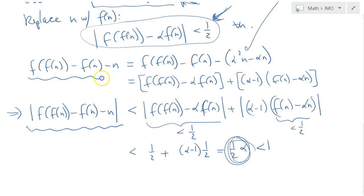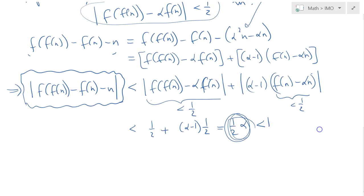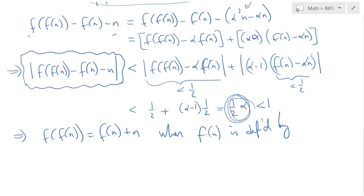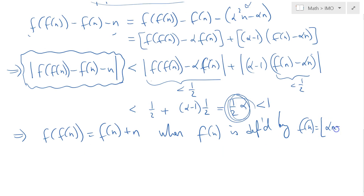So there's only one value which would satisfy, so this whole thing inside is zero, implying that the interior of the absolute value is zero, leading to the fact that f(f(n)) is in fact f(n) plus n when f(n) is defined by the way we defined it in our claim, f(n) equals the floor of alpha n plus one half. So therefore, when f is defined like this, it satisfies this condition.